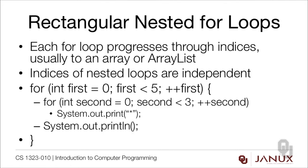Here's an example of a nested for loop with a rectangular pattern. The outer loop has int first equals zero, first less than five, plus plus first. The inner loop has int second equals zero, second less than three, plus plus second. In the body of the inner loop we're printing out a single asterisk — note that's a print and not a println. After the inner for loop completes, we do one new line.